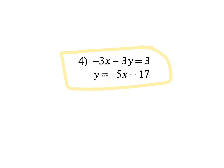Do I already have one of the equations set up nice and easy? Yes. They're telling me here what y equals, so I can take this and plug it into the first equation where I see y. I'm going to rewrite the top equation: negative 3x minus 3 times — instead of y — negative 5x minus 17. Equals 3.